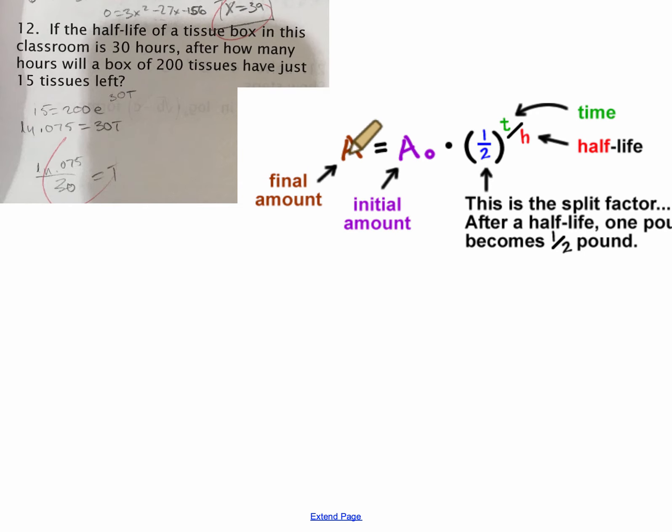So here we need the final amount to be 15 tissues, and the initial amount is 200 tissues. Since it's a half-life, our base is one-half. And the time is 30 hours.